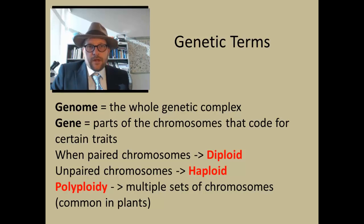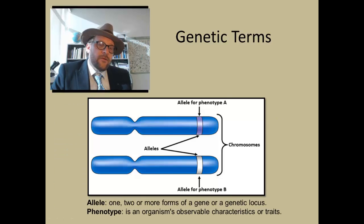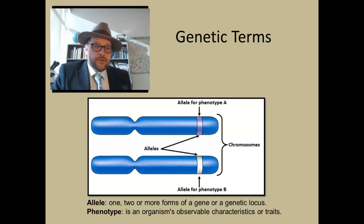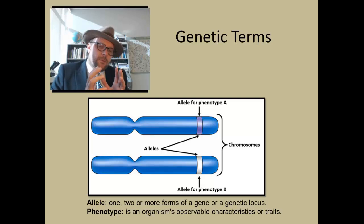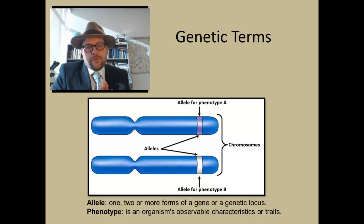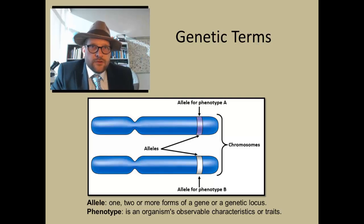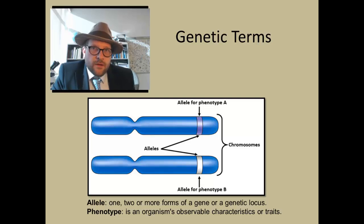An allele is one, two, or more forms of a gene or genetic locus on a chromosome. A phenotype is the organism's observable characteristics or traits coded for by that allele. In paleontology we can refer to a fossil's phenotype — the expression of the trait — but never the gene, allele, or genome, which are not preserved.